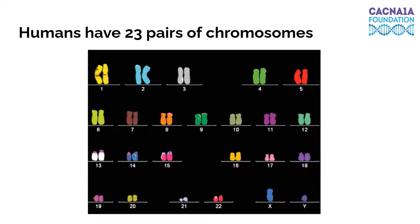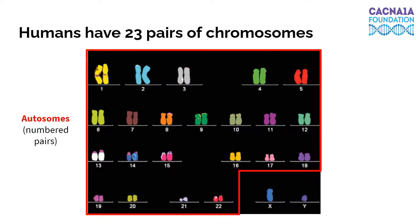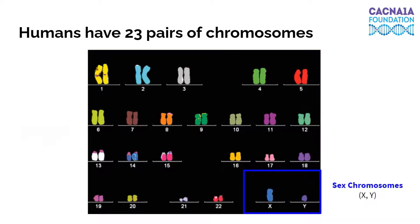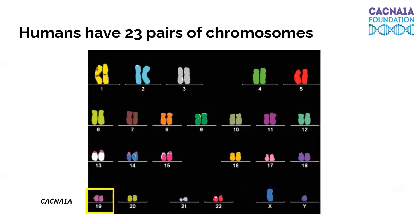That double helix coils up even more to form a much larger and more compact structure called a chromosome. Humans have 23 pairs of chromosomes. Each pair has a chromosome inherited from a mother and a chromosome inherited from a father. There are 22 numbered pairs of chromosomes called autosomes, and a pair of sex chromosomes, either an X with an X or an X with a Y. Each of these chromosomes has specific genes located on them — for example, the CACNA1A gene is located on the 19th chromosome.